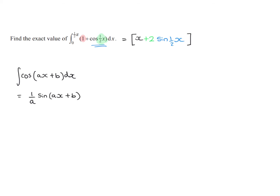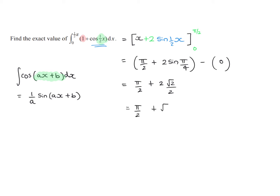So cos integrates to sin of the same function, but you divide by the derivative of the inner function. Now we must make sure we substitute in our limits as well. So substituting in our upper limit first of all, we're going to get π/2 plus 2 sin(π/4). Our lower limit in both parts evaluates to give us 0, so we can discount that. This then gives us π/2 plus 2 multiplied by root 2 over 2, so the final answer is π/2 plus root 2.